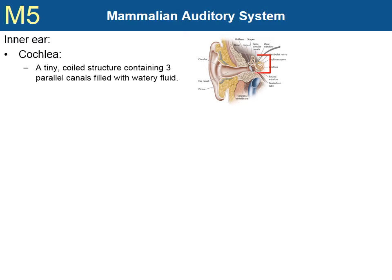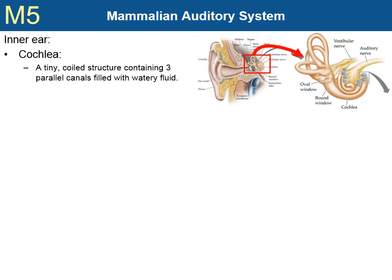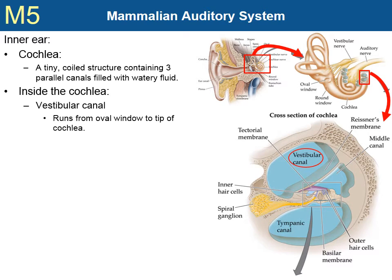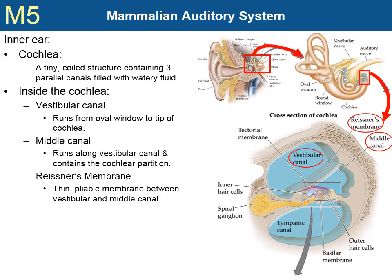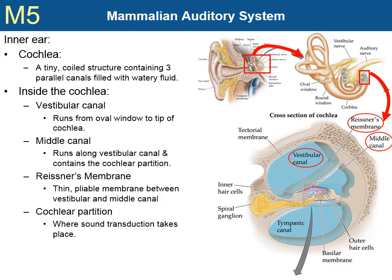This brings us to the inner ear. The cochlea is a tiny coiled structure which contains three canals that run side by side, each filled with fluid. The vestibular canal runs from the oval window to the tip of the cochlea. The middle canal runs alongside the vestibular canal and contains the cochlear partition. Reissner's membrane separates these two canals — it is thin and pliable. The tympanic canal runs from the tip of the cochlea back to the round window at the base of the cochlea. The cochlear partition is where sound transduction actually takes place.